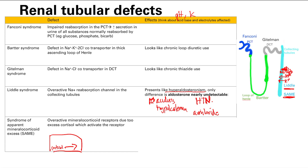In SAME syndrome, this enzyme doesn't work, so you don't get cortisone — you're stuck with cortisol, which acts on the mineralocorticoid receptor and causes overactivity. It's going to be the same idea as Liddle syndrome: too much sodium reabsorption in exchange for H-plus and K. So it presents the same way: metabolic alkalosis, hypokalemia, and hypertension.